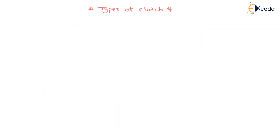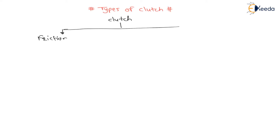These clutches are classified into two types. Number one is friction clutches, and number two is positive clutch.